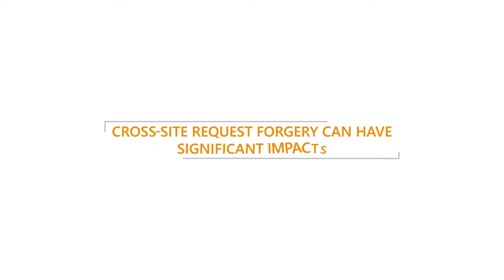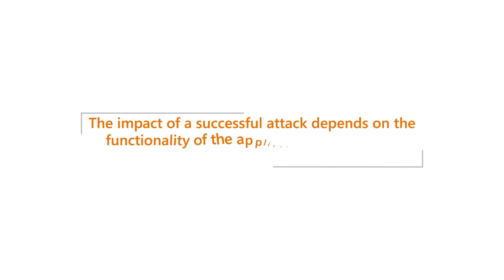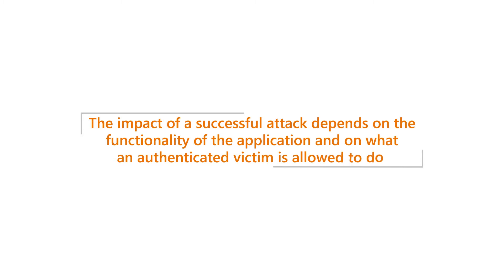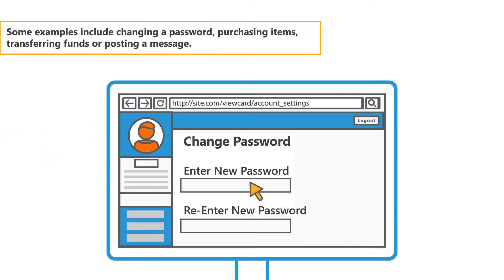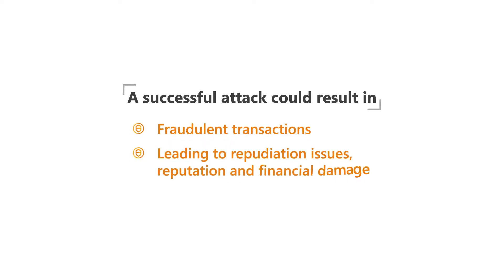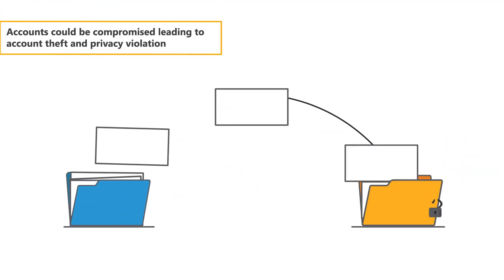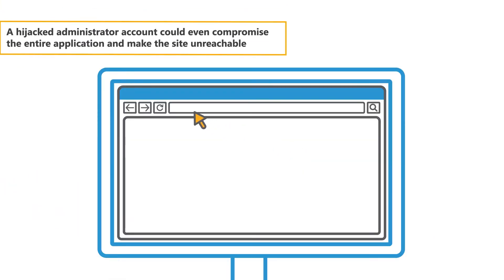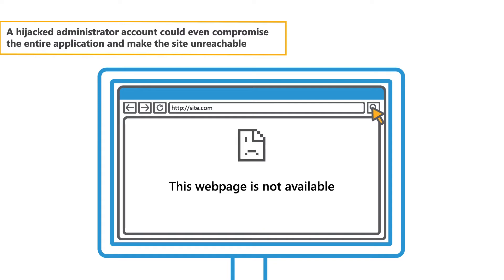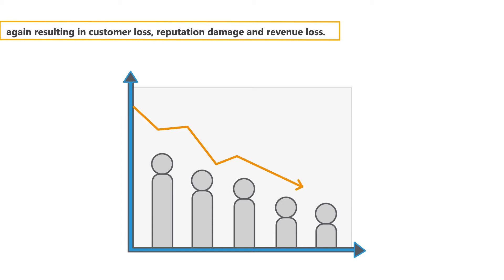Cross-site request forgery can have significant impacts. The impact of a successful attack depends on the functionality of the application and on what an authenticated victim is allowed to do. Some examples include changing a password, purchasing items, transferring funds, or posting a message. A successful attack could result in fraudulent transactions leading to repudiation issues, reputation and financial damage. Accounts could be compromised leading to account theft and privacy violation. A hijacked administrator account could even compromise the entire application and make the site unreachable, resulting in customer loss, reputation damage, and revenue loss.